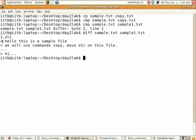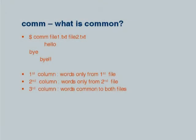The diff command shows the differing lines between two files — the lines in file one that differ and the corresponding lines in file two. The comm command shows what is common and what is different. It outputs three columns: words only in file one, words only in file two, and words common to both.